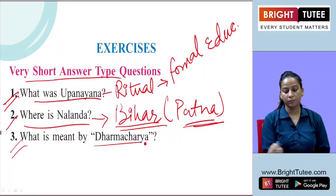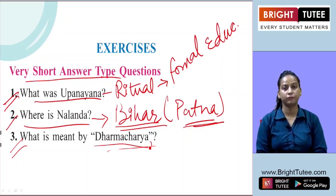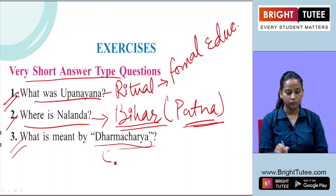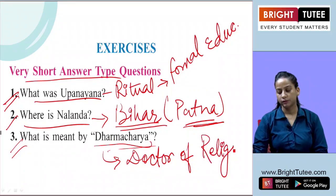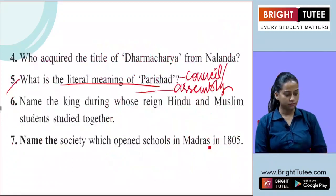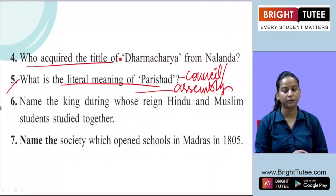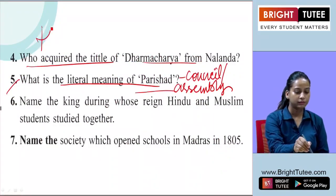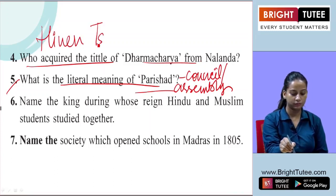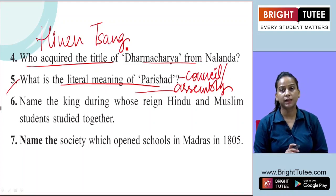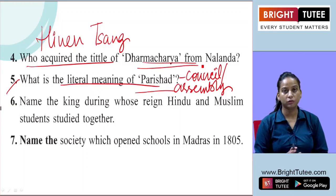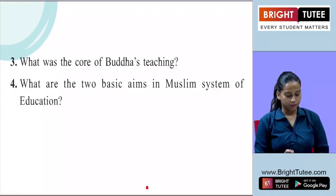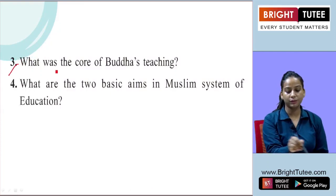What is meant by Dharm Charya? Here we have to define the meaning. Dharm Charya refers to Doctor of Religion. Then they have asked who acquired the title of Dharm Charya from Nalanda. The answer is Xuanzang, who studied at Nalanda and acquired the title of Dharm Charya, that is Doctor of Religion, from Nalanda.